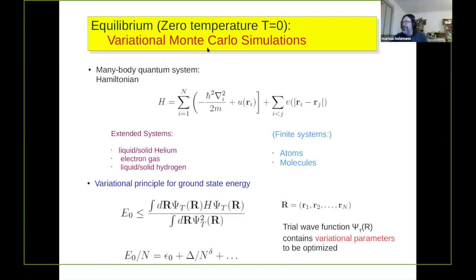Just to remind briefly, I'm considering the Hamiltonian which is just the non-relativistic Schrödinger equation, with the important part being the interaction between two particles. There might be an external potential, but in most of the talk I will consider a uniform, extended system, and at the end I'm interested in the thermodynamic limit.